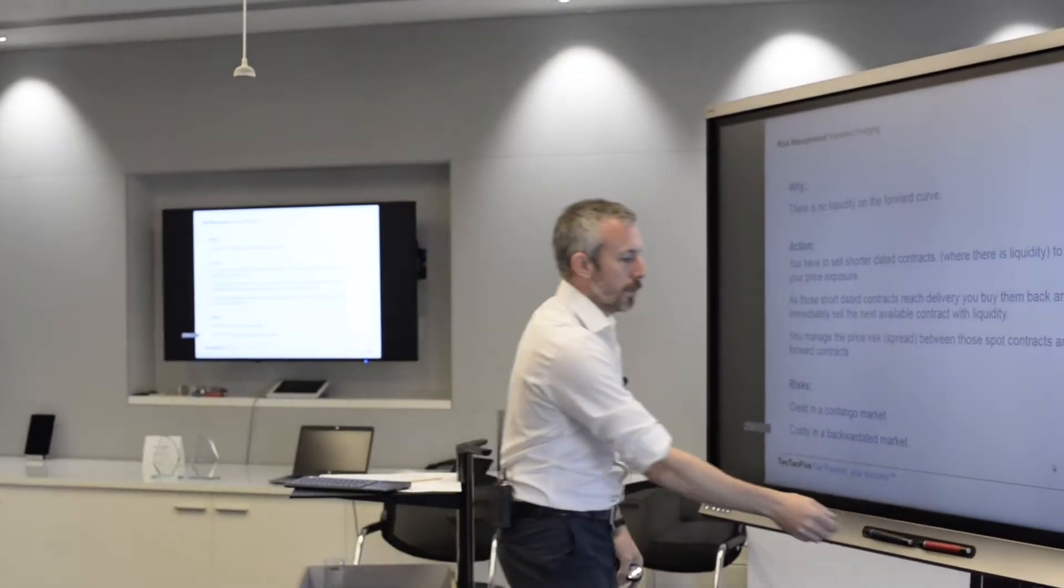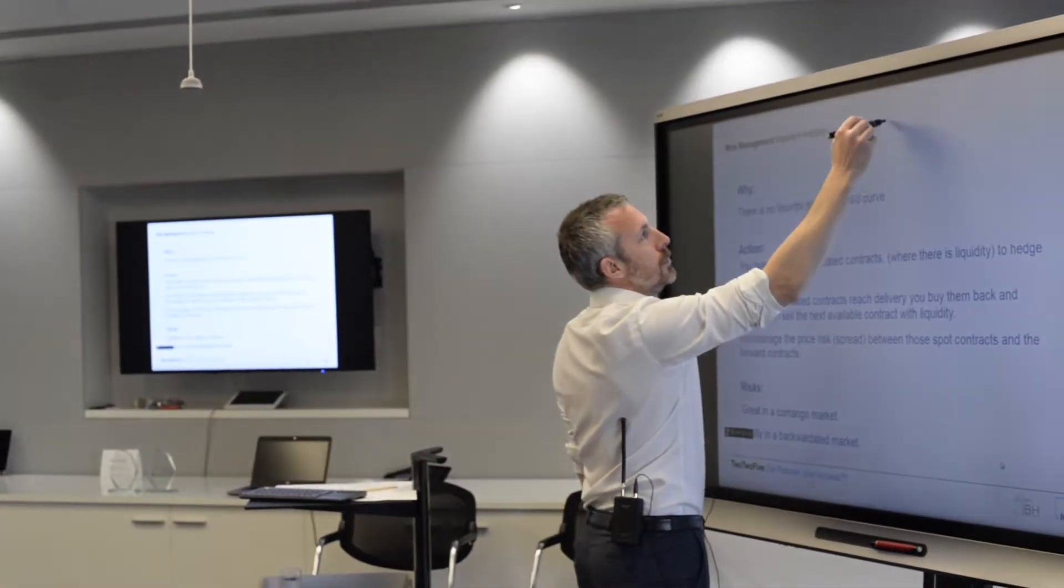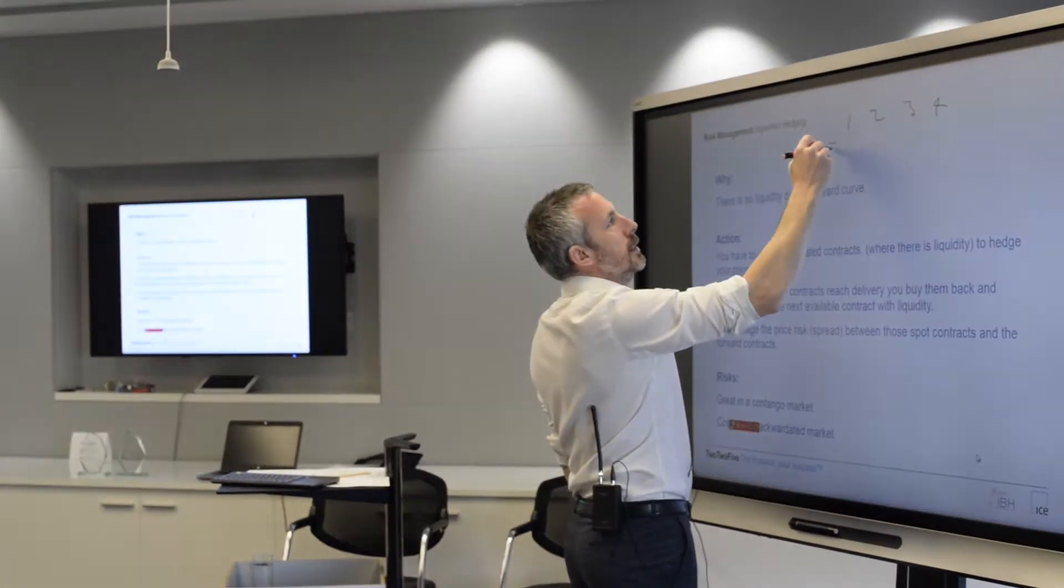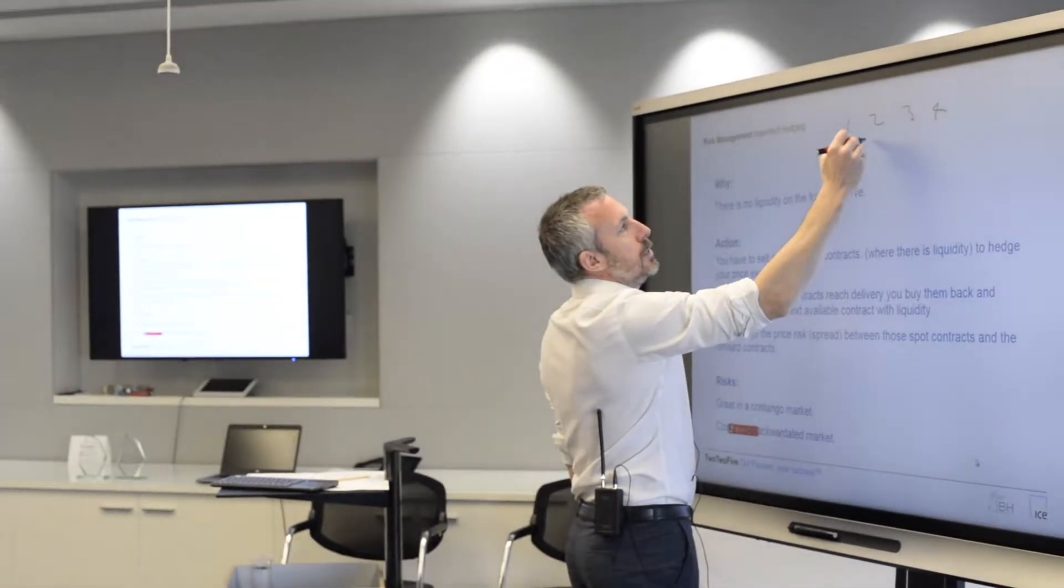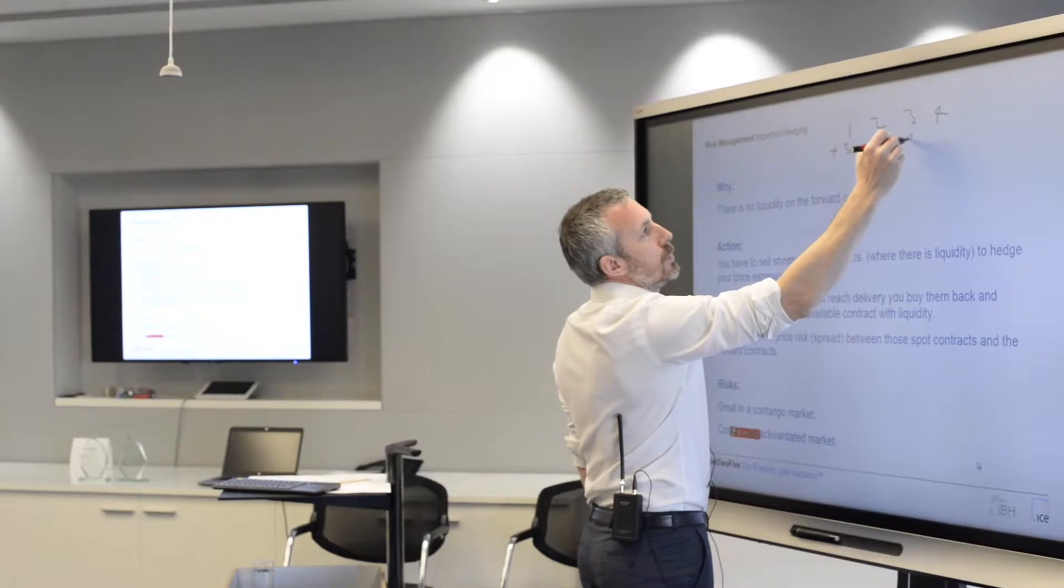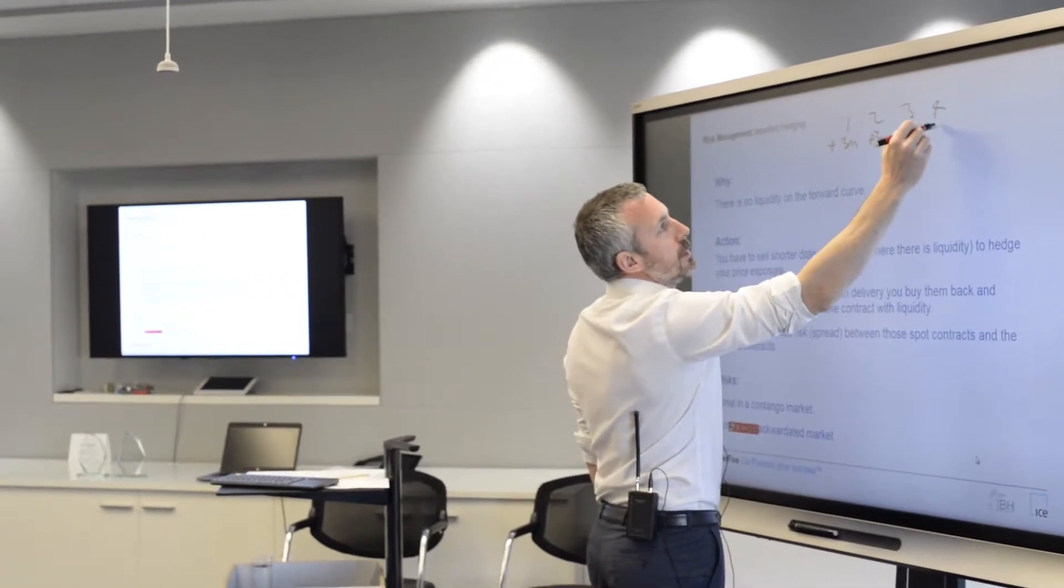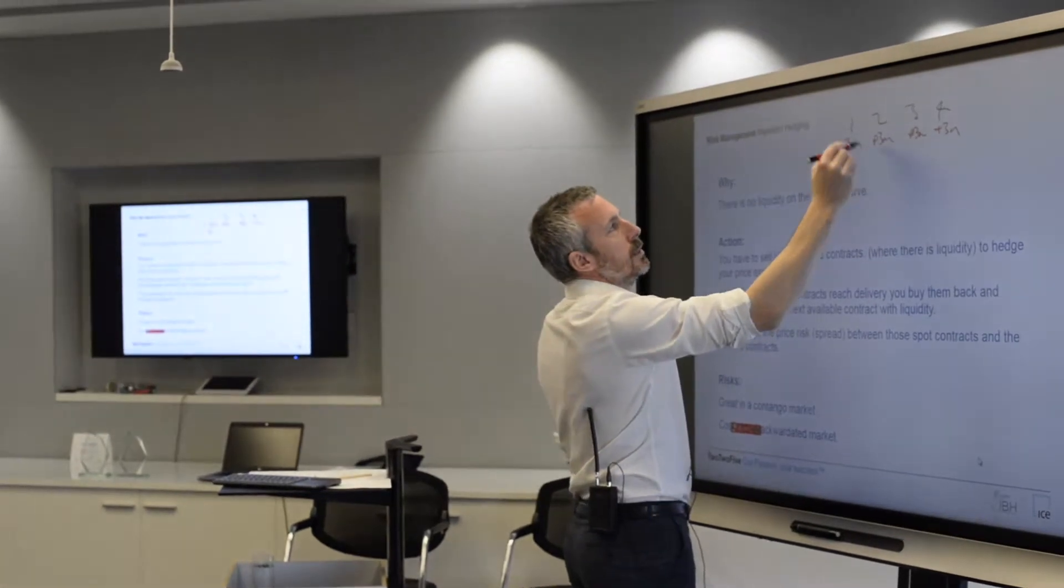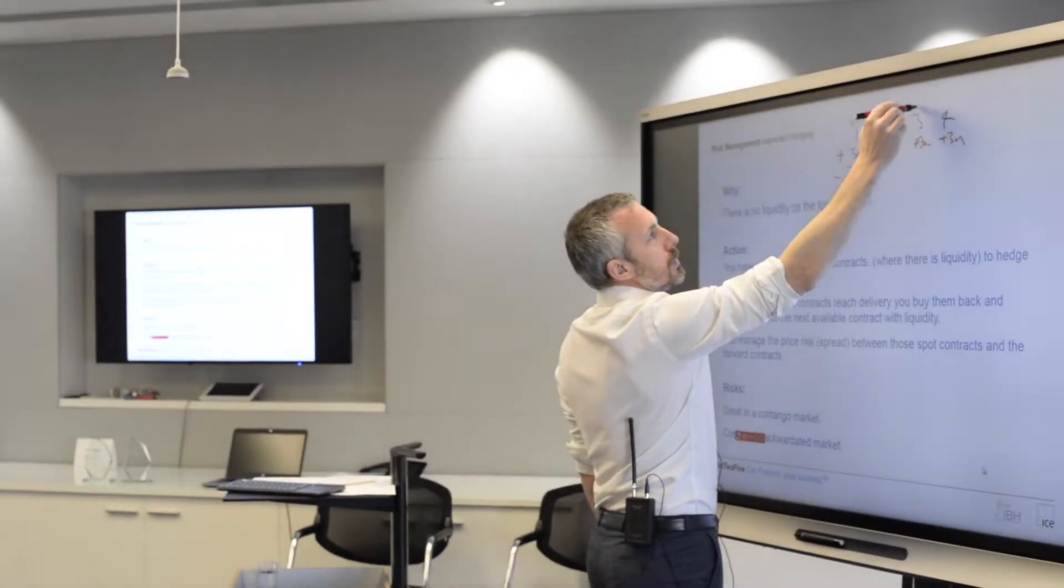So you might have to sell, if you've got three months—one, two, three, four—and you go long 3 million MMBTU, 3 million MMBTU, 3 million MMBTU. So to hedge properly you would be selling 3 million month, month, month, month.